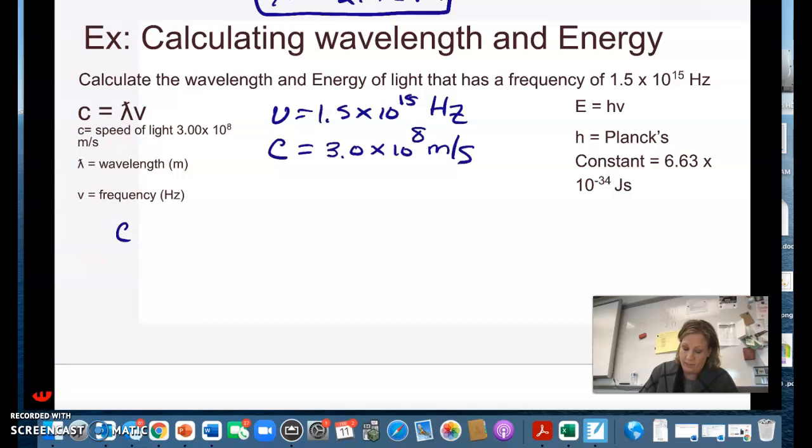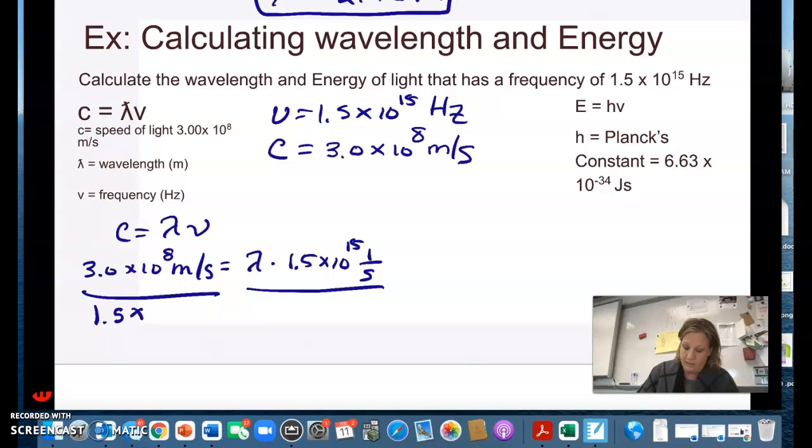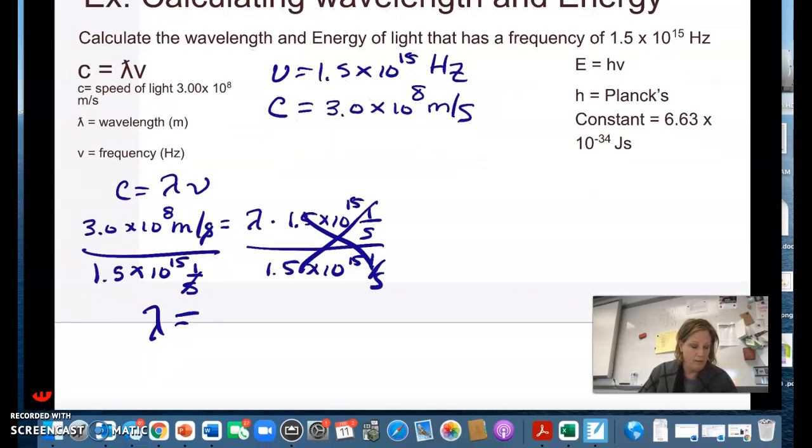So to get the wavelength we would plug in. Again I'm going to write hertz as 1 over second and then divide both sides by 1.5 times 10 to the 15th. So then I get my wavelength. My seconds cancel. I'm in meters. Wavelength here ends up being 2 times 10 to the negative 7th meter.